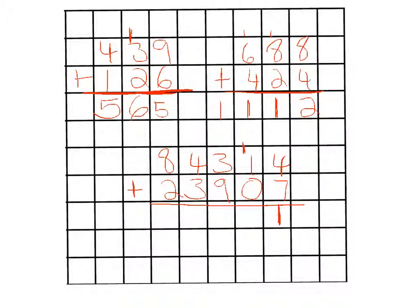Then we go 1 plus 0 is 1, plus the other 1 makes 2. Then we've got 3 plus 9 is 12. Carry the 1 over to here. Then we go 4 plus 3 is 7. Add the 1 makes 8. And 8 plus 2 is 10. And because we can't carry it over, that's where we put it. So the answer to this question is 108,221.